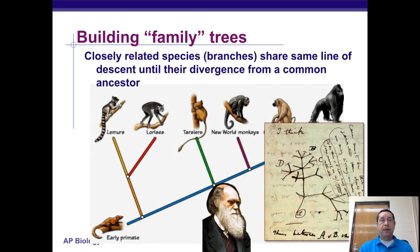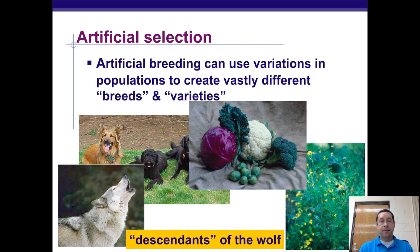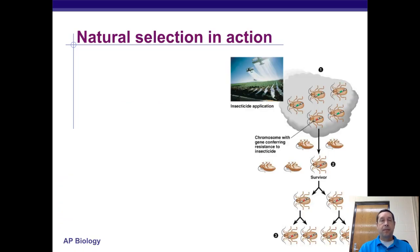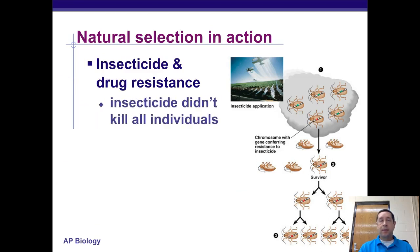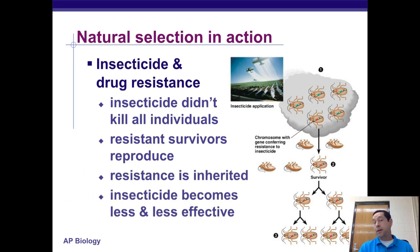We can build family trees from this data. Darwin had his branched tree of life concept, and today we use cladograms and similar tools. Finally, artificial selection involves humans breeding specific species for specific traits, selecting those traits instead of nature selecting them. Dogs are descendants of wolves, and all the different brassica vegetables are descendants of wild mustard. Insecticide and drug resistance is another human-caused example: insecticides don't kill all organisms — some are resistant and become more common, resistance becomes inherited, and the insecticide becomes less and less effective.